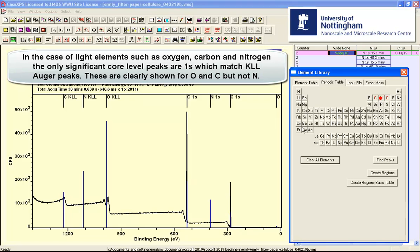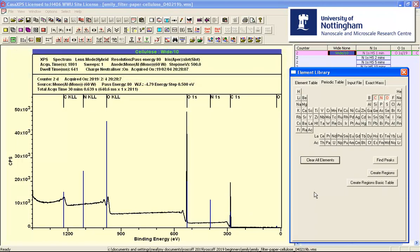In the case of nitrogen, this is the peak that we're wondering about. Well there's no evidence of peaks at the nitrogen 1S or the nitrogen Auger. So taken together, the element library has only found two elements.